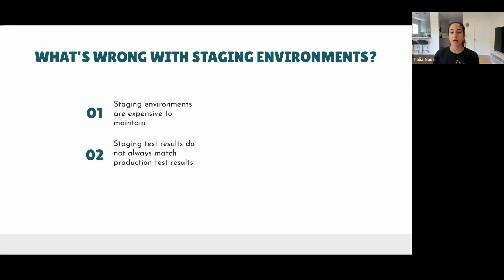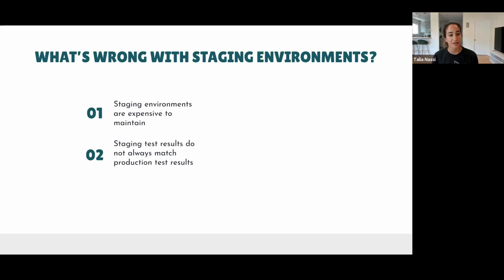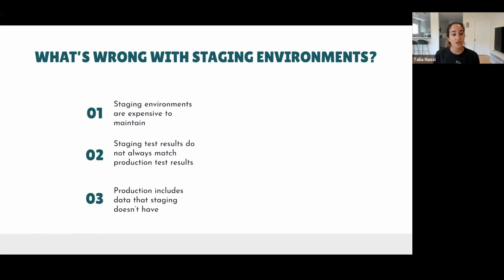Staging test results do not always match production test results. Imagine you're testing a feature in staging, you worked hard testing every requirement, went through documentation with the product owner, worked with your developers to fix every bug, and your end-to-end tests are passing in staging. So you sign off and launch to production — and there's a bug. These environments are different, plain and simple, which means your test results are going to be different.